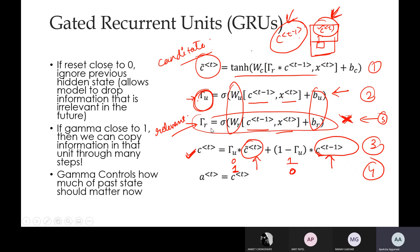To summarize the GRU architecture: we have two choices — either the present candidate or whatever is coming from the previous cell state. The update gate decides whether to store the value being calculated right now or preserve whatever is coming from the previous time step.